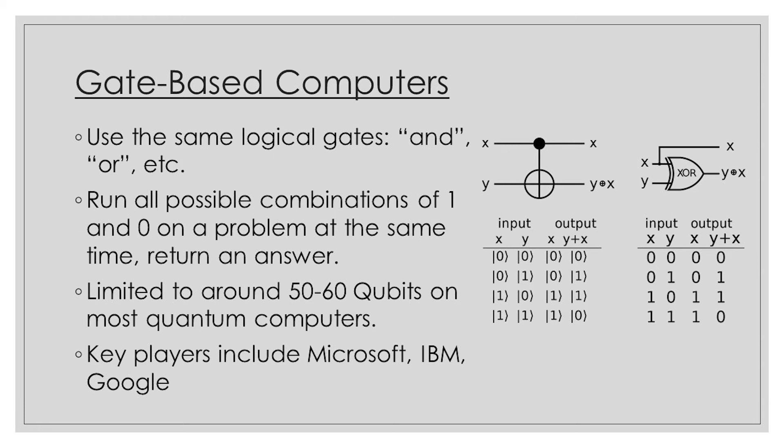Gate-based quantum computers allow users to run complex programs using the same logical operations, such as OR and AND, that would be used in classical code. Unlike a classical computer, however, gate-based quantum computers can solve even the most difficult problems in the fraction of a second. The qubits within the gate-based computer allow the hypothetical equation values to be both 0 and 1, and every value in between, allowing every single possible solution to be explored at the exact same time before returning the correct answer.